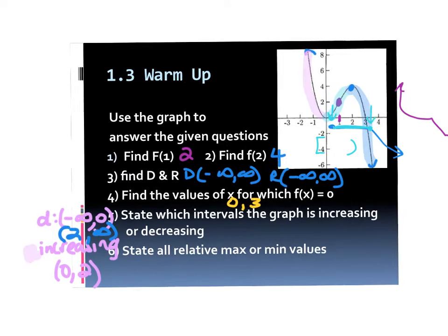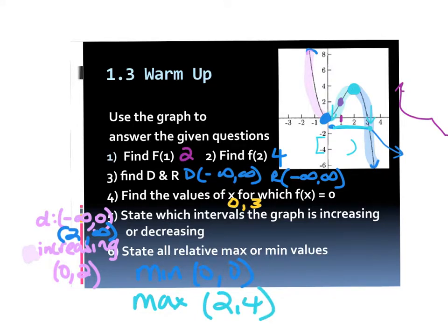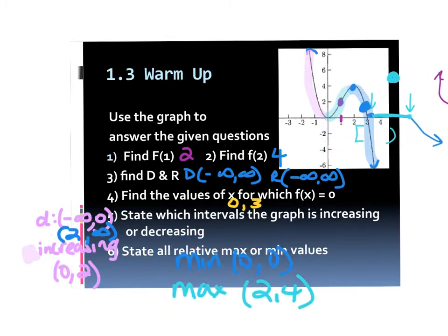Number 5 also says state all the relative max or min values. There's a relative minimum at (0, 0) and a relative maximum here at x = 2. For the decreasing intervals, you can write both negative infinity to 0 and 2 to positive infinity under the same decreasing label — you don't have to separate them out, but you can if you want to.